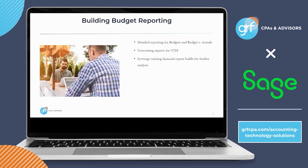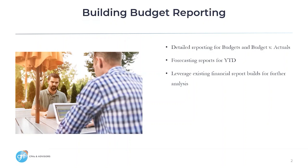To get started, I'd like to show some examples of ways that building out your reporting in the financial report writer can assist you and your organization. First, you can build out detailed reports for both budgets and budget versus actual scenarios. You can create current year-to-date forecasting reports, expanding on time periods, whether that is quarterly or monthly. And finally, maybe there's an existing report you have built and would like to expand on it by including one of the options we will discuss on the next slides for further analysis.